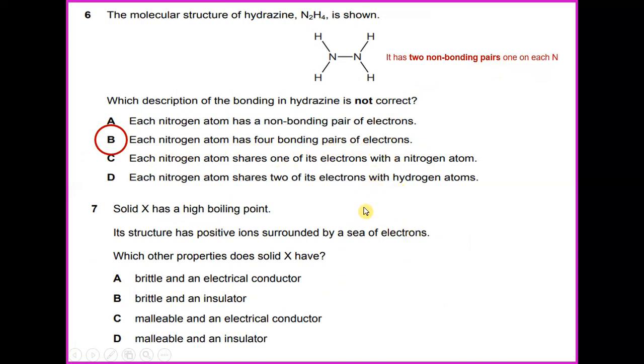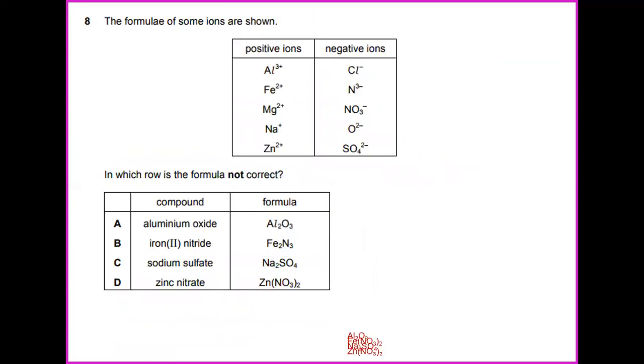Solid X has a high boiling point. Its structure has positive ions surrounded by a sea of electrons. Which other properties does solid X have? The answer would be malleable and an electrical conductor.